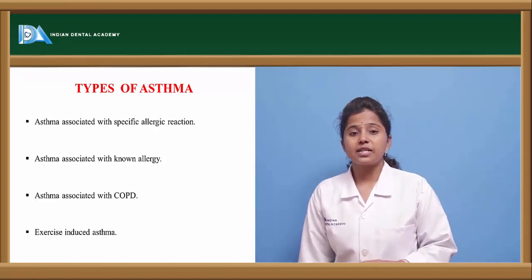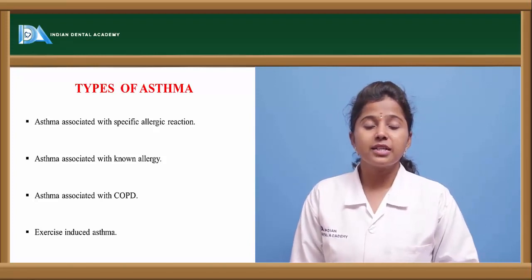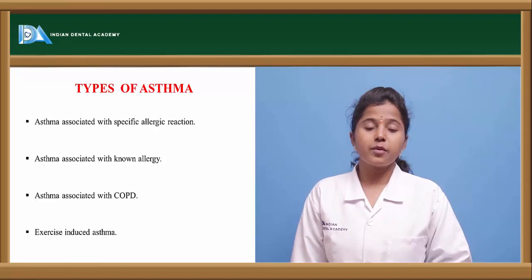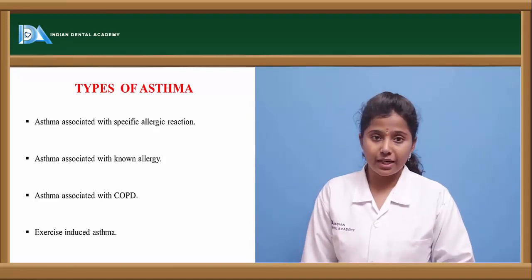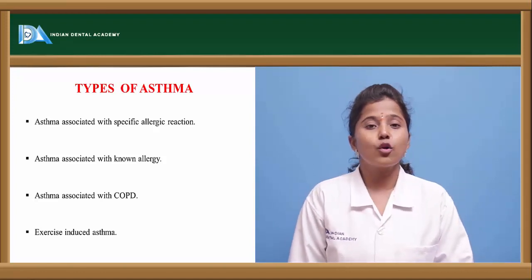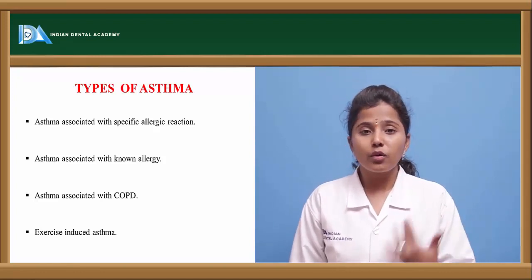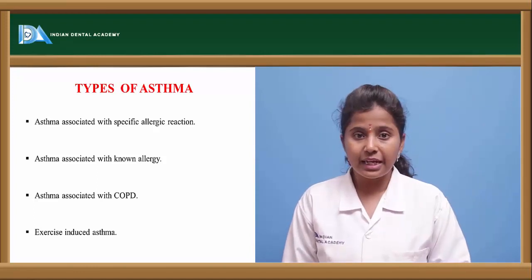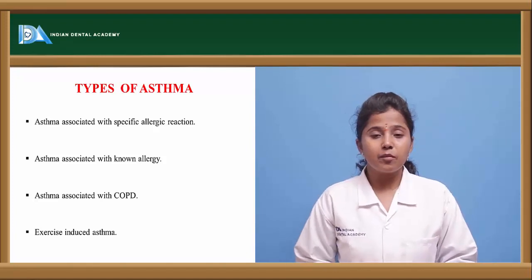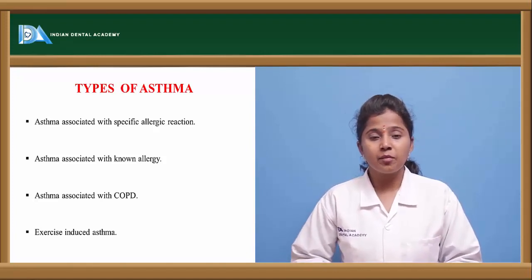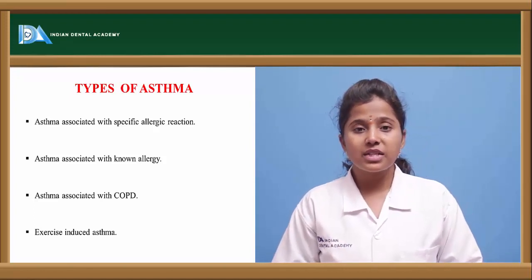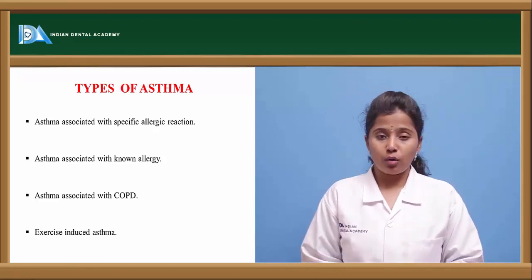Another type of asthma is asthma caused because of COPD — chronic obstructive pulmonary disorder. If a person is suffering from COPD, they have more chances of getting asthma. The other one is exercise-induced asthma. As we exercise for a longer period of time, more air intake is observed, and if we inhale excessive air for a particular period, it causes spasm of that muscle and thereby the airway is obstructed.